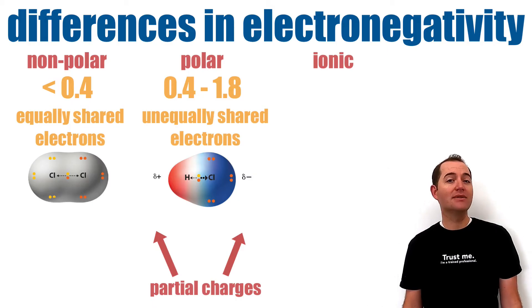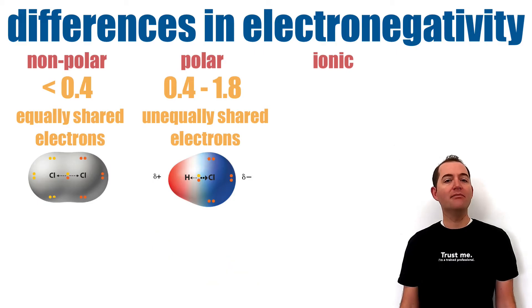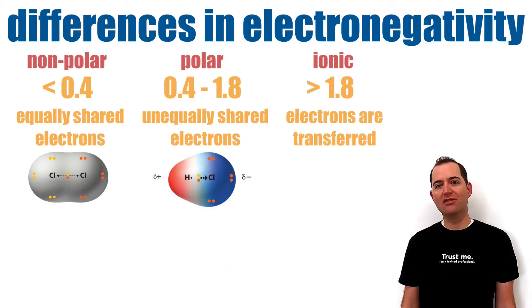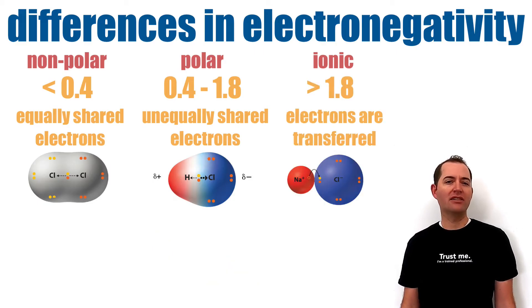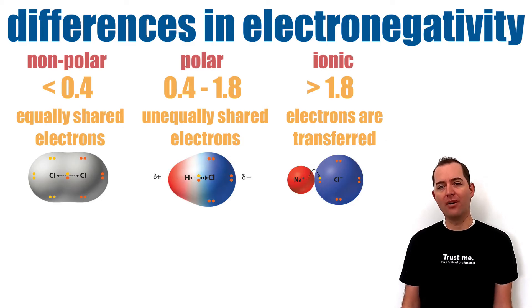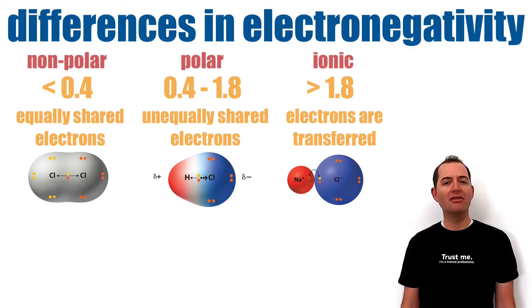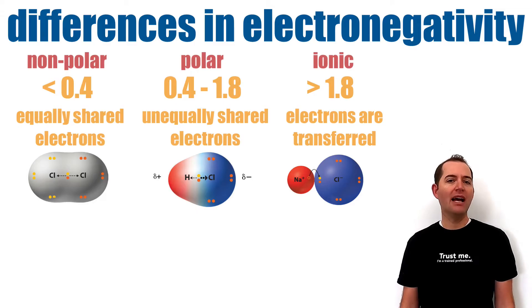In polar covalent bonds, the shared electrons are held closer to one of the atoms, giving the compound a partial charge on the atoms involved — this is what classifies the compound as polar. In bonds with the greatest difference in electronegativity, a transfer of electrons takes place and ionic bonds are formed.